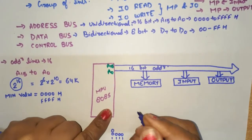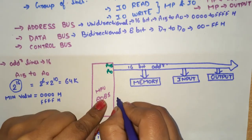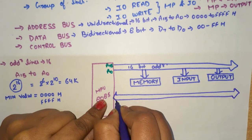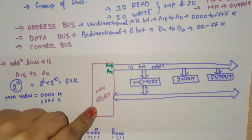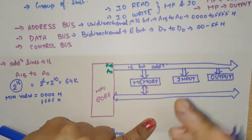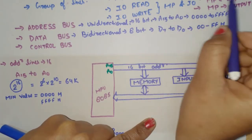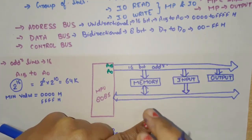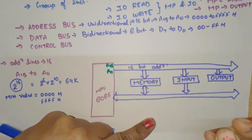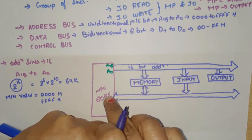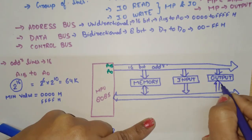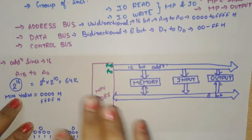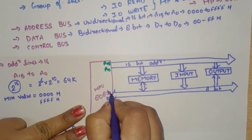The data bus is bidirectional. When memory read and write operations are both performed, data flows in both directions. During a read operation, the input device always sends data to the microprocessor. When a process is performed and we need to display the result, the microprocessor sends data to the output device. So the data bus is 8 bits and bidirectional, defined as D0 to D7.